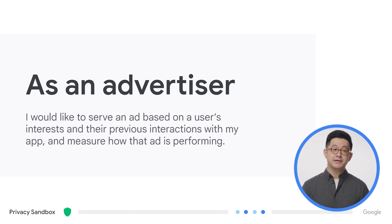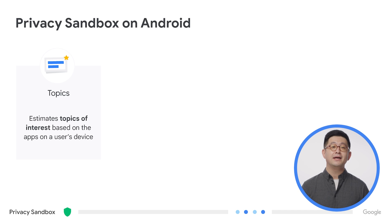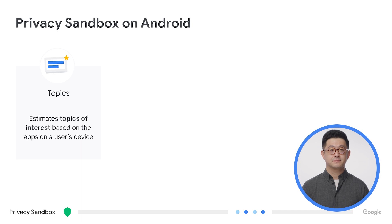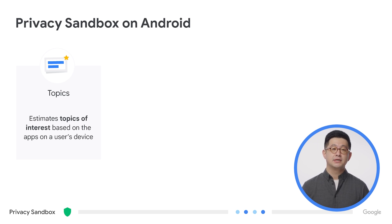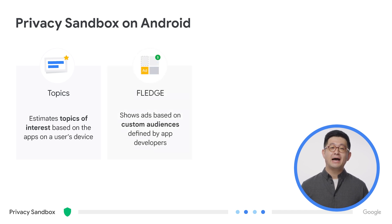So how do we do this? There are many projects across the Privacy Sandbox on the web and Android, but for Android specifically, there are four key initiatives. The first is the Topics API, which gathers on-device information to estimate the topics of interest to a particular user, which advertising SDKs can then use to target relevant users with relevant ads. The FLEDGE API opens up more complex advertising use cases.